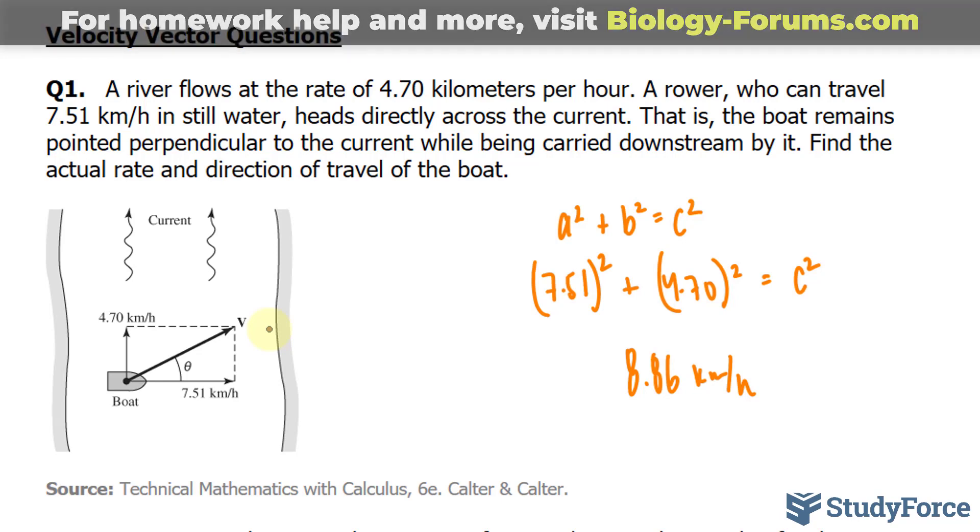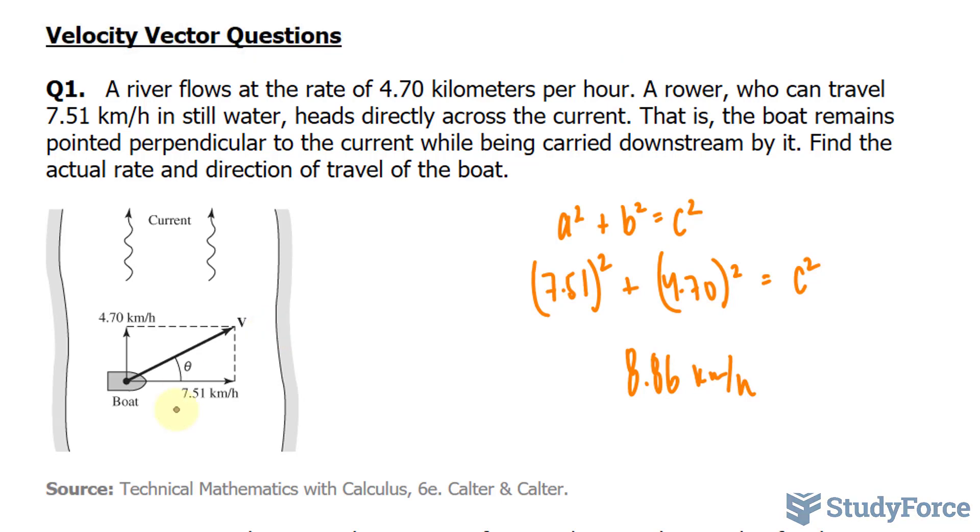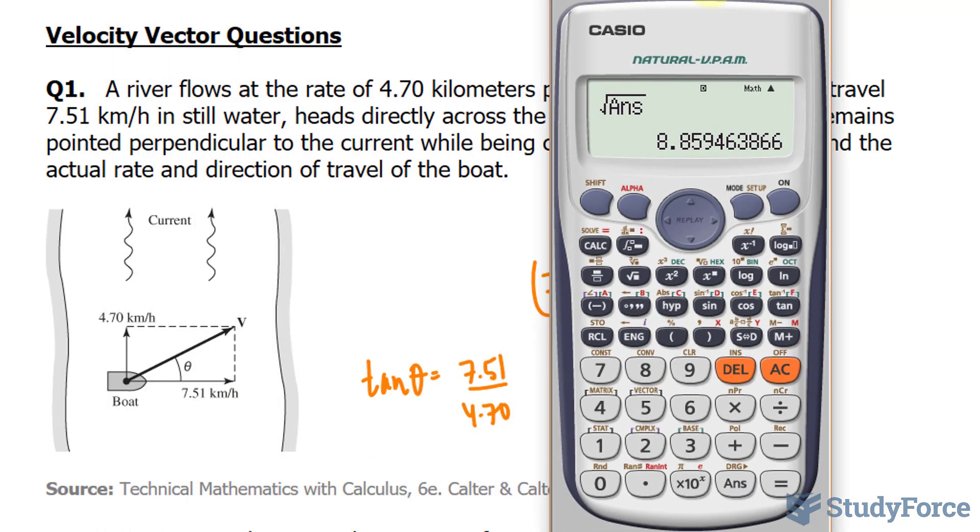Now, of course, we need to find the angle. We can do that using any trigonometric function. I'll use the function that relates adjacent and opposite because those were the given values. You always want to use given values rather than ones that you found. So we have adjacent and our opposite is 4.70. So I have A and O. That's tangent.